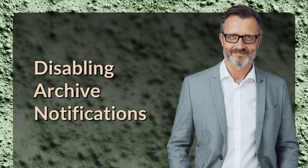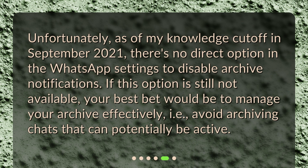Disabling Archive Notifications. Unfortunately, as of my knowledge cutoff in September 2021, there's no direct option in the WhatsApp settings to disable archive notifications. If this option is still not available, your best bet would be to manage your archive effectively — i.e., avoid archiving chats that can potentially be active.